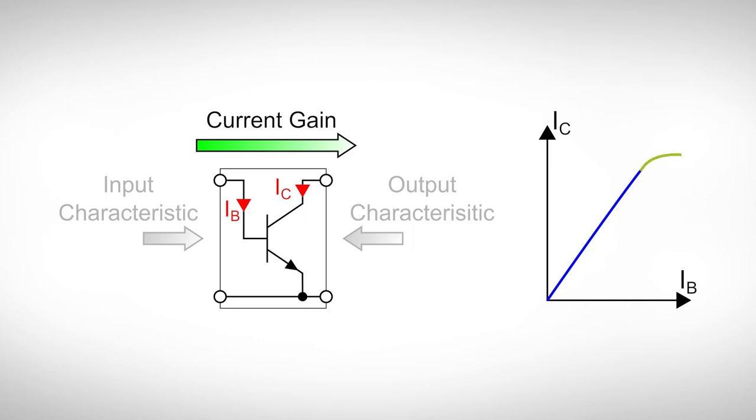Towards higher currents, the slope decreases as our transistor is no longer able to keep up and the current gain decreases.